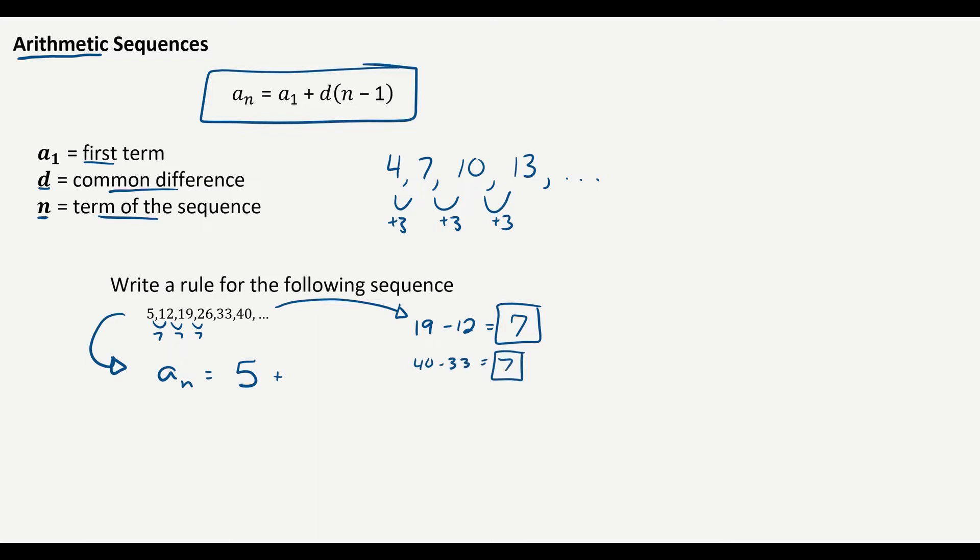To find the common difference, you take a term and you subtract the previous term. So seven is our common difference times n minus one. There you go. Easy as that, that is how you write the rule for an arithmetic sequence.